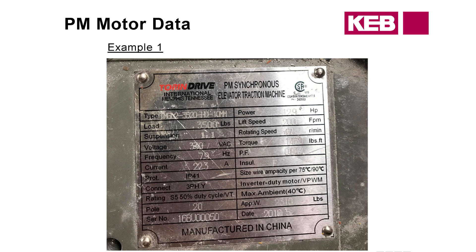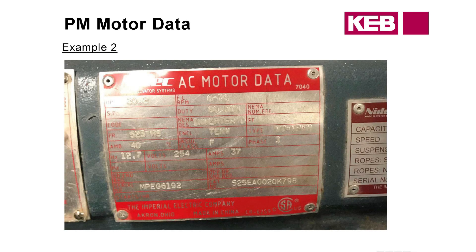Here's an example of Toren motor data — they do a pretty good job supplying a lot of information. They provide the number of poles: 20. They provide frequency: 7.9 Hz. Voltage: 330. They provide power in horsepower, lift speed in feet per minute, and rotating speed in RPM. One note on RPM: the terminology can differ — sometimes it's denoted as R/min, 1/min, or simply RPM.